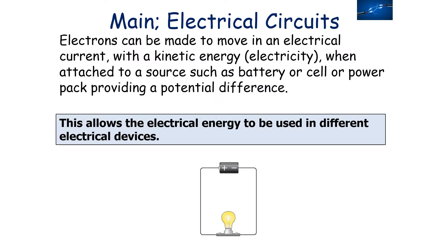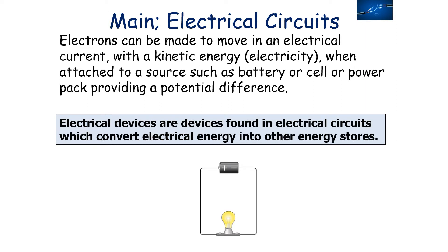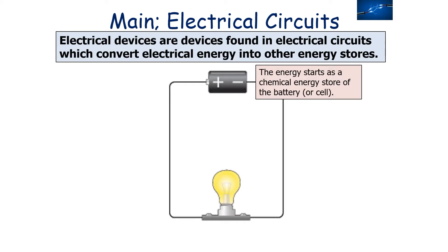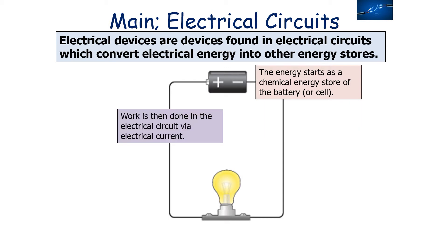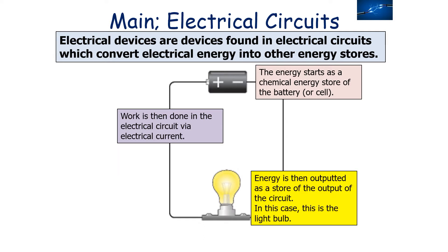Electrons can be made to move in an electrical circuit with kinetic energy when attached to a source such as a battery, cell, or power pack, which provides a potential difference. This allows electrical energy to be used in different electrical devices. Electrical devices convert electrical energy into other energy stores. The energy starts as the chemical energy store of a battery or cell, which puts energy into the circuit, and work is done via electrical current — remember, work is always done when charge is moved.